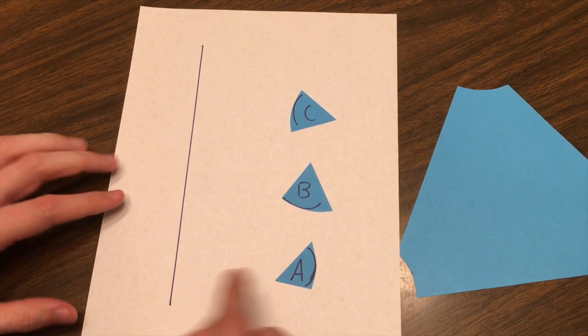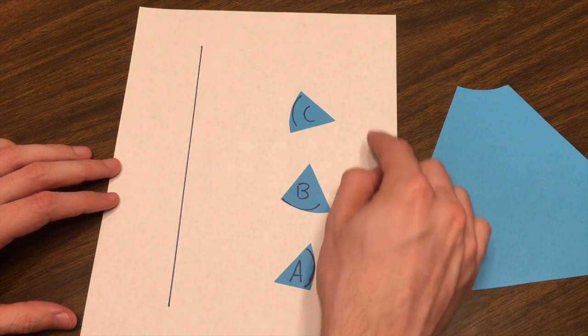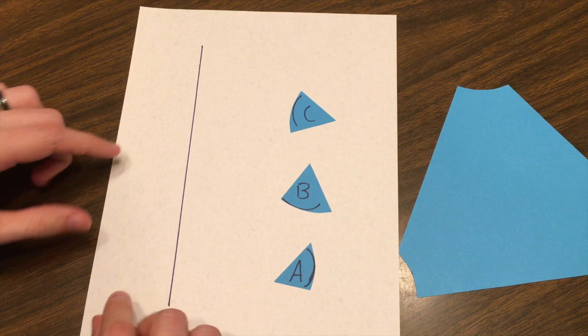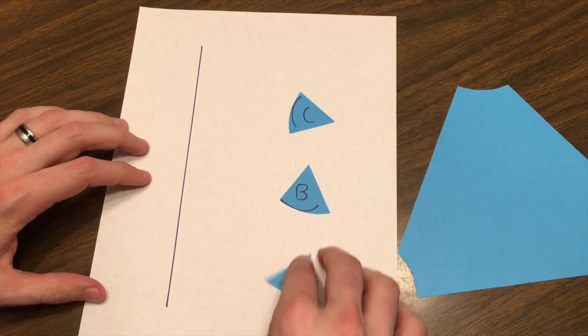If, in fact, the interior angles of this triangle add up to be 180 degrees, then I should be able to fit them together like a jigsaw puzzle using this line as a boundary.